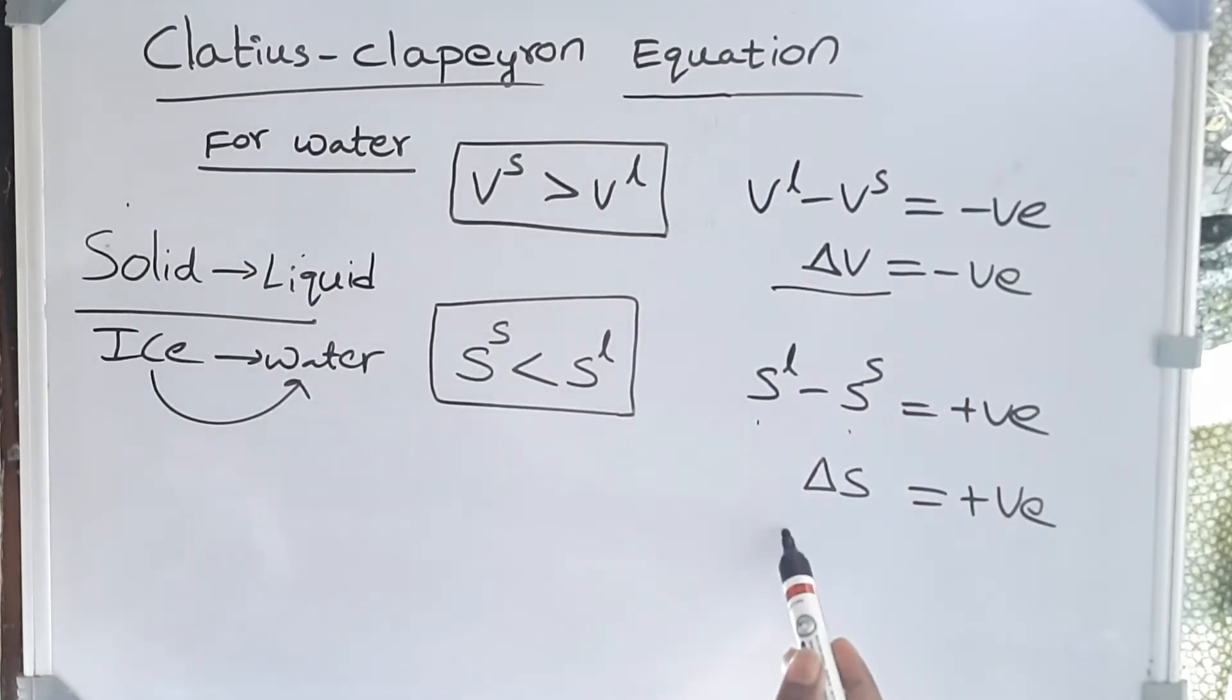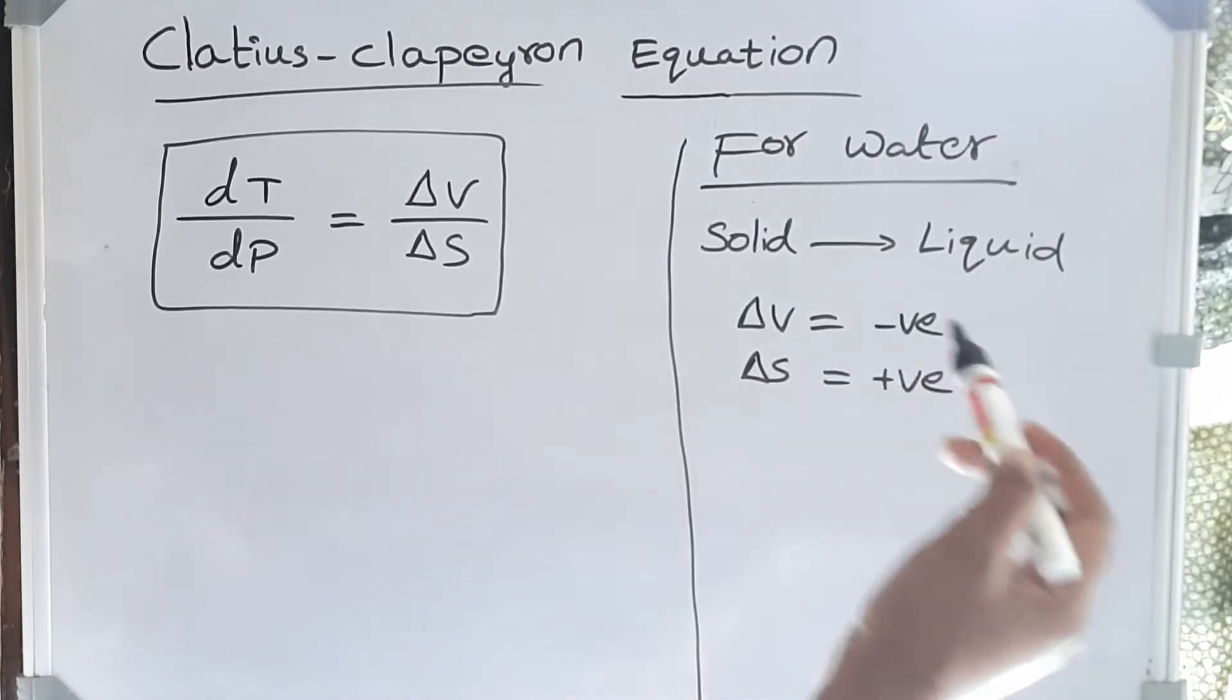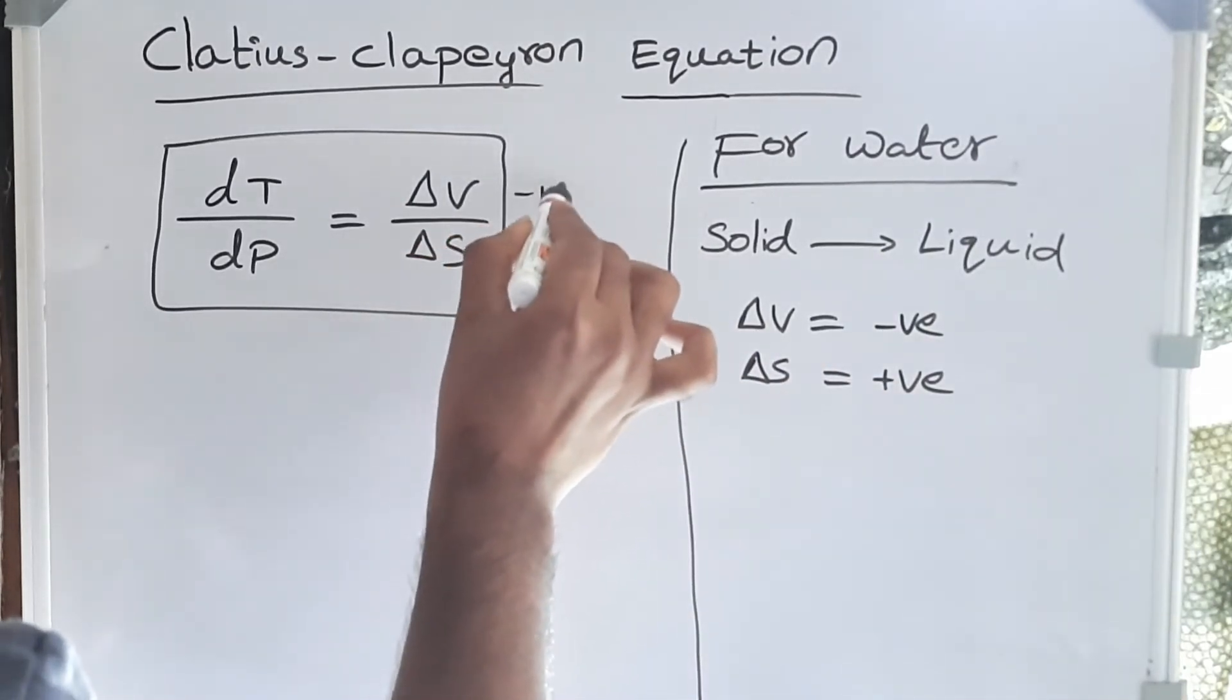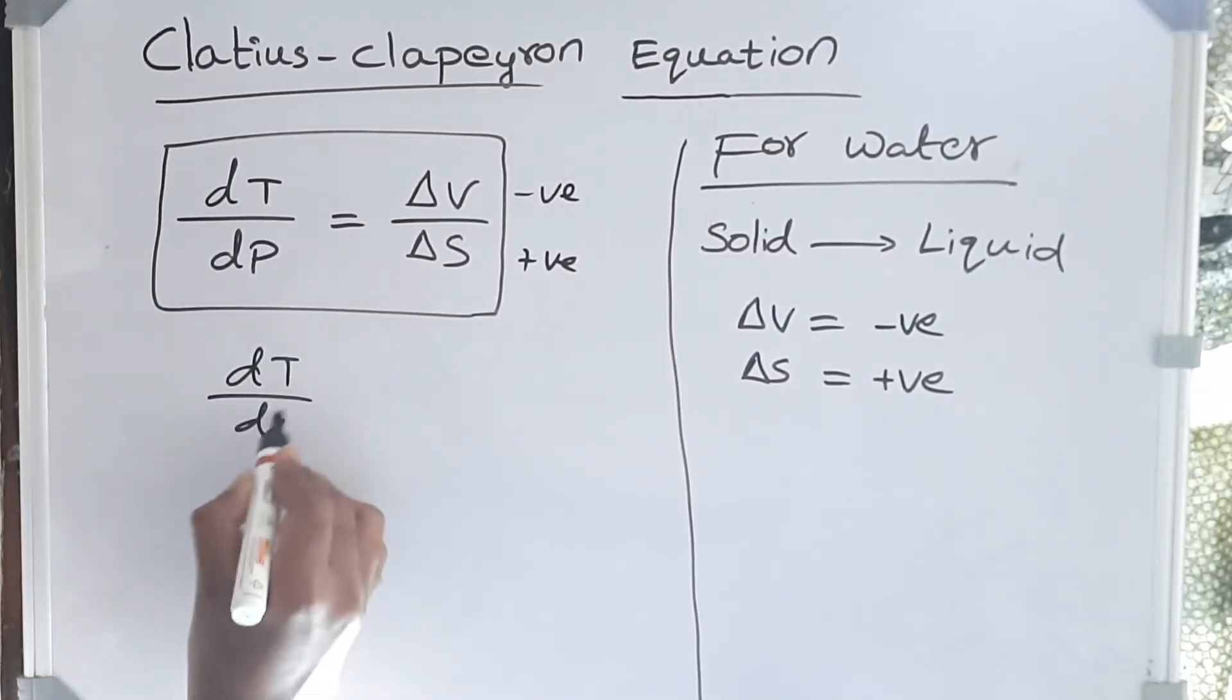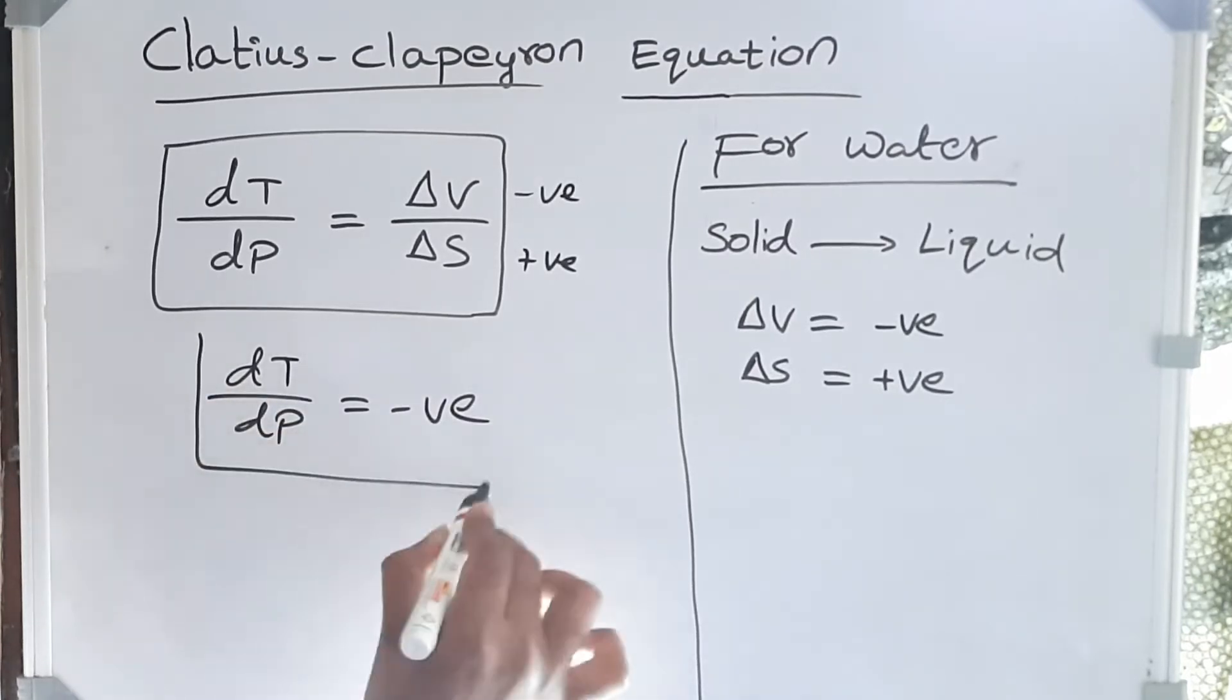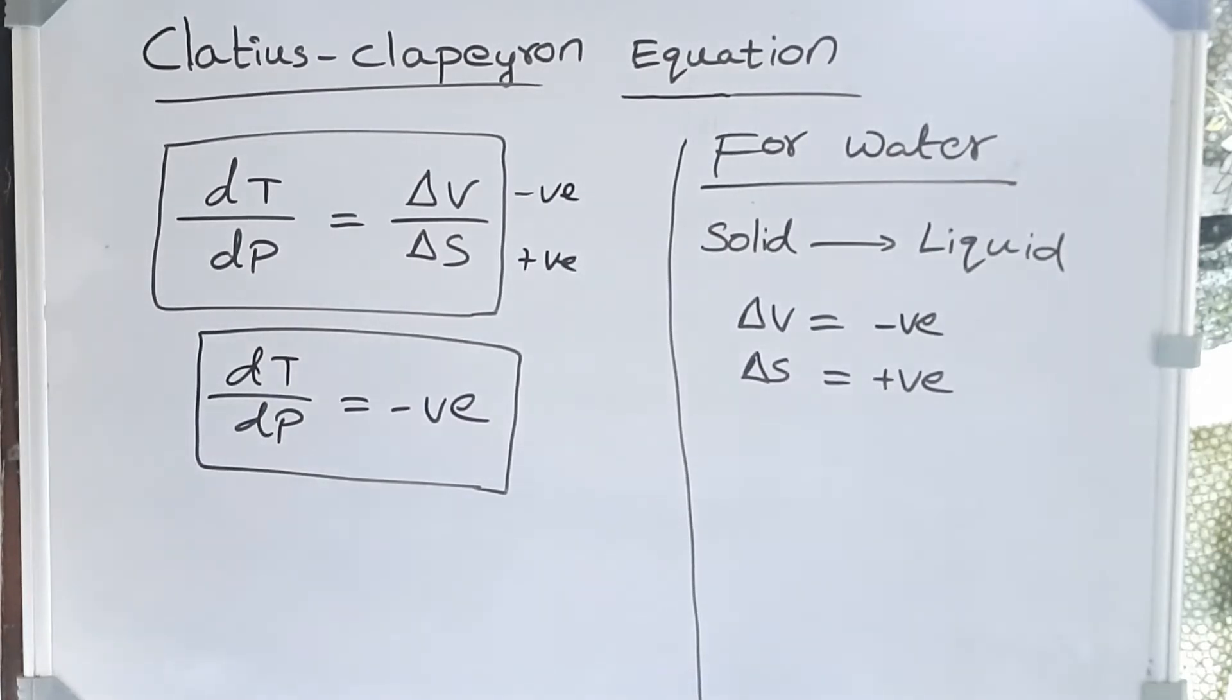So here ΔV is negative and ΔS is positive. Let's apply these values to the Clausius-Clapeyron equation. ΔV is negative and ΔS is positive, so this is negative and this is positive, so this gives us rate of change of transformation value is negative, which means if one increases the other one decreases. Here if we increase the pressure, what happens? If P increases, transformation temperature decreases because rate of change of transformation with pressure is negative.